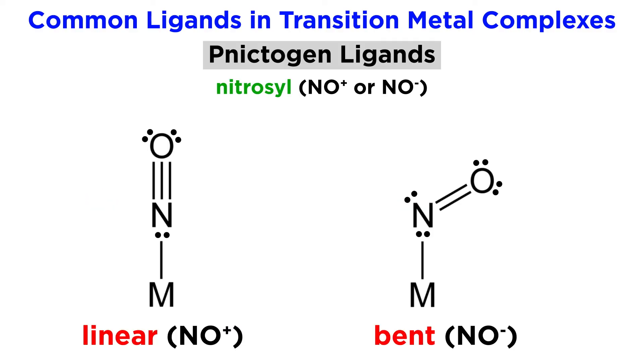We should also note that apart from this linear bonding for the nitrosyl cation, the nitrosyl anion can also coordinate but in bent fashion, as is shown here. The number of electrons contributed will not change, but we must be aware of this discrepancy in charge as well as geometry.